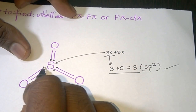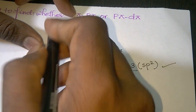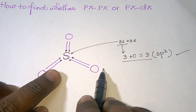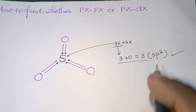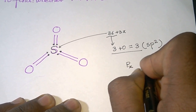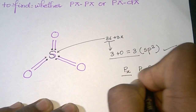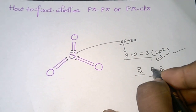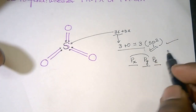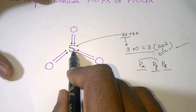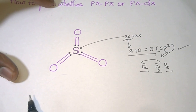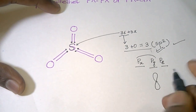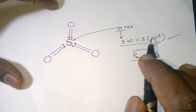Now that we have found sulfur is sp2 hybridized in SO3, sulfur has three p orbitals: px, py, and pz. Since hybridization is sp2, two p orbitals have been used up in hybridization, so only one p orbital is left, and that will form pi bonds.